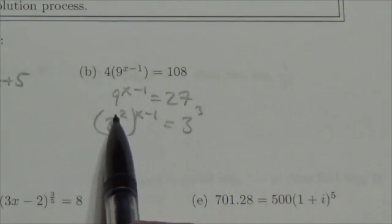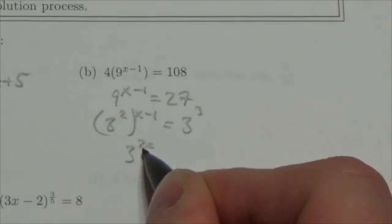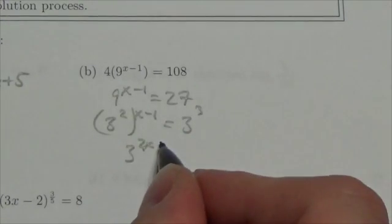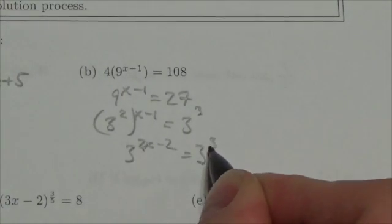Okay, and now when I've got a power of a power, you multiply the exponents together, so this becomes 3 to the 2x, and don't forget to distribute it to all terms here, so 2x minus 2. This will be equal to 3 cubed.